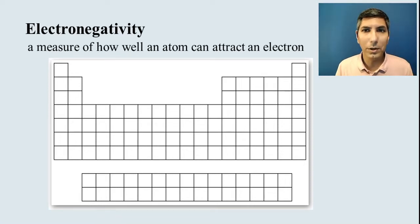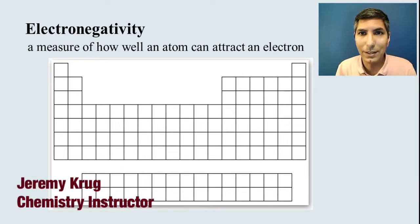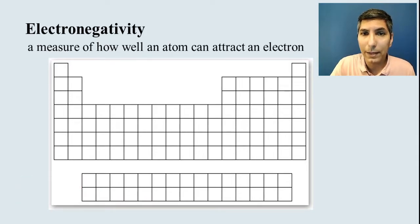In this third video over Unit 1, Section 7, we're going to be focusing on more periodic trends, this time specifically electronegativity. Now electronegativity is a measure of how well an atom can attract an electron.